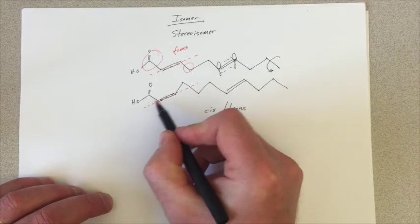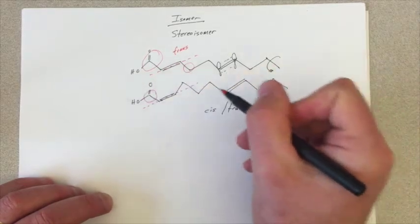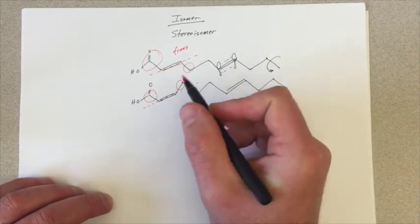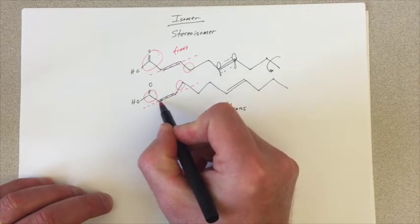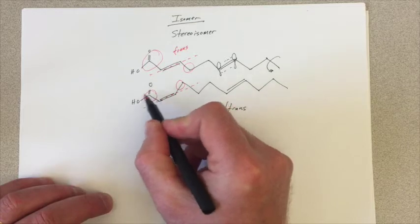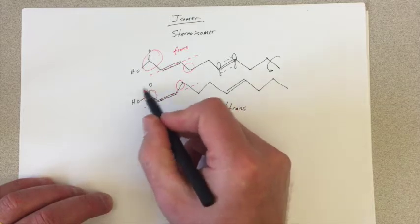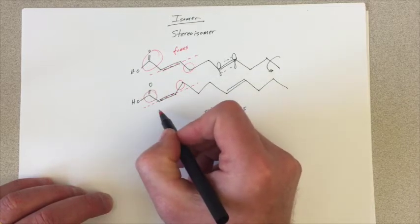If I do the same thing with this other isomer, interesting, interesting. Remember, we're looking at the interesting thing on each carbon. What are the two other things on this carbon? Carboxylic acid or the hydrogen? Carboxylic acid wins, beats the hydrogen.